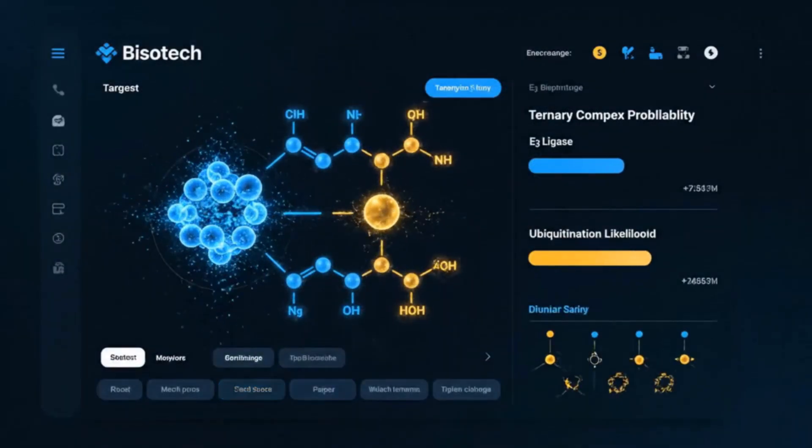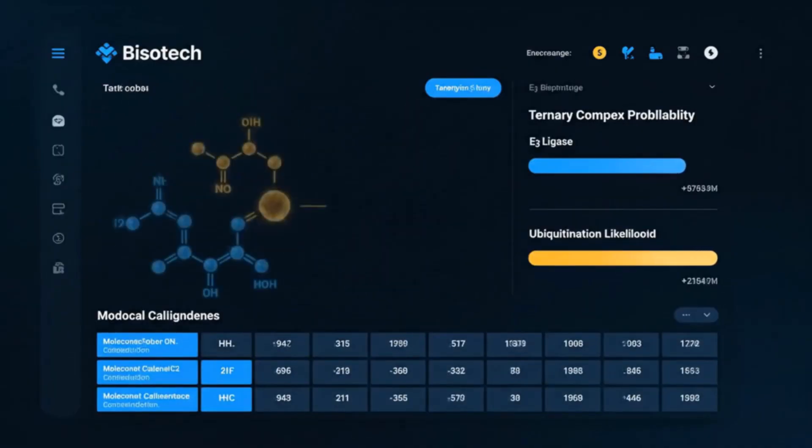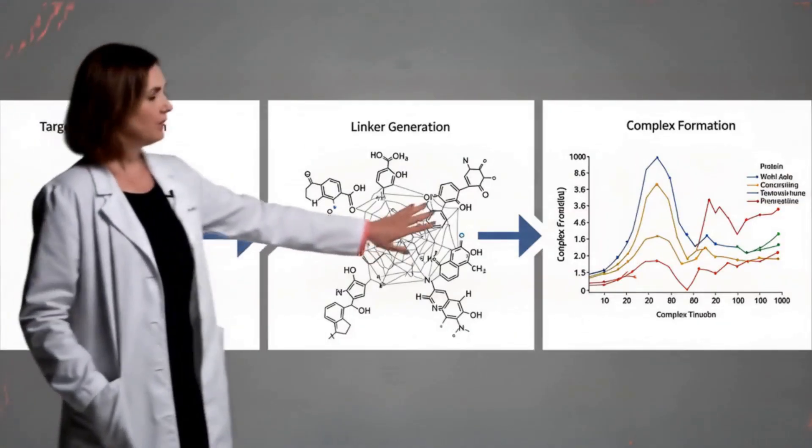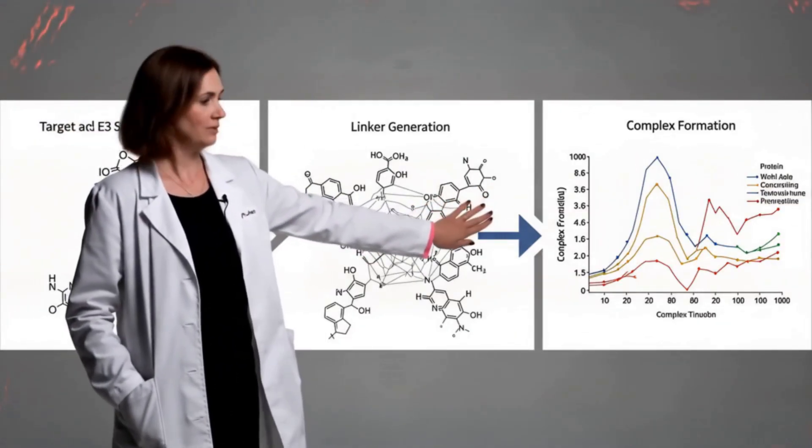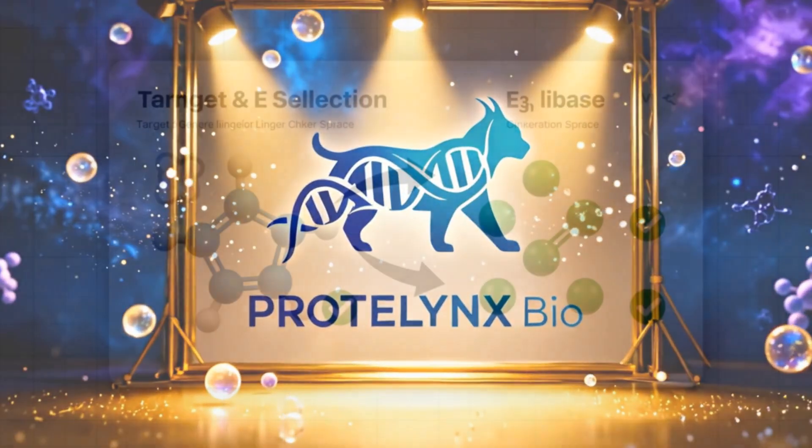Our Protac pipeline: select target and E3, generate linker chemistries, predict ternary complex formation and kinetics, prioritized for synthesis. Protelink's Bio is advancing an emerging neural physics approach.